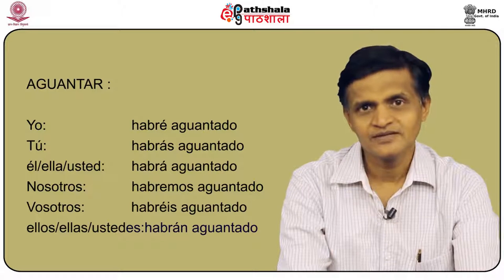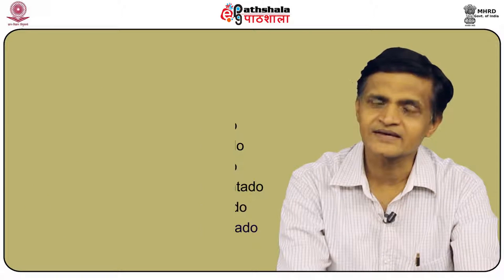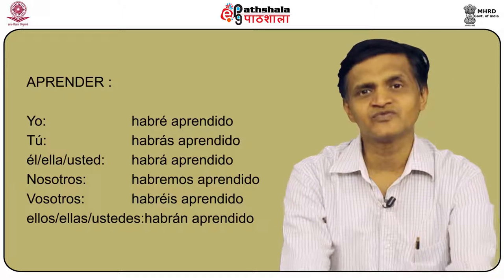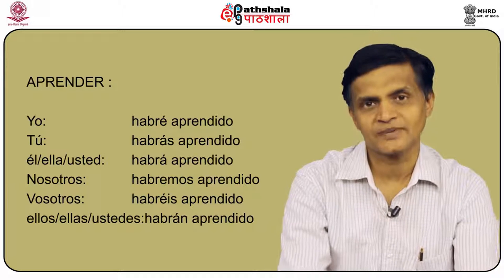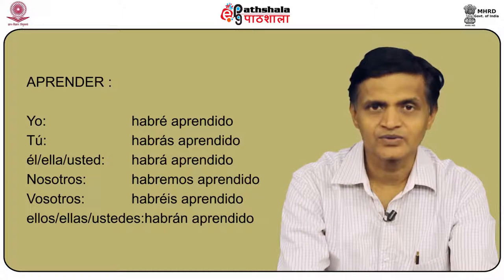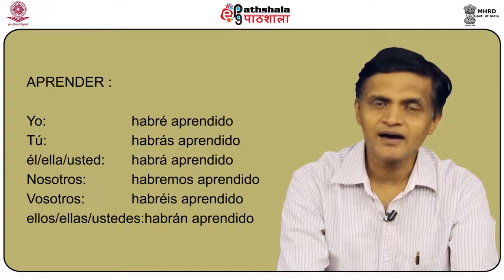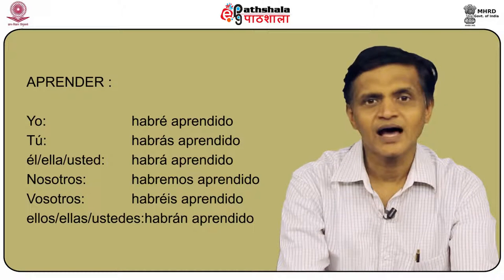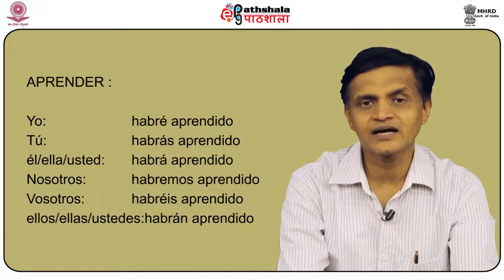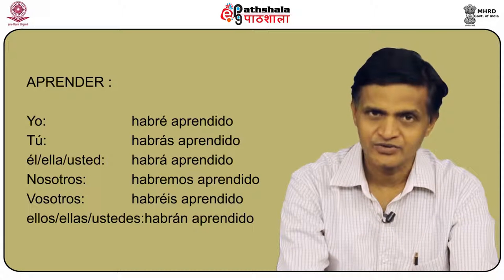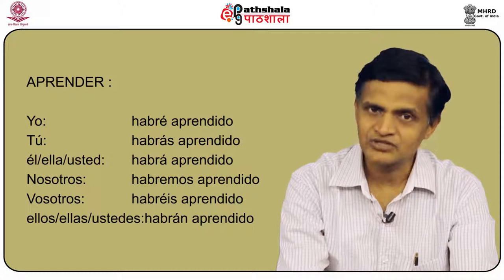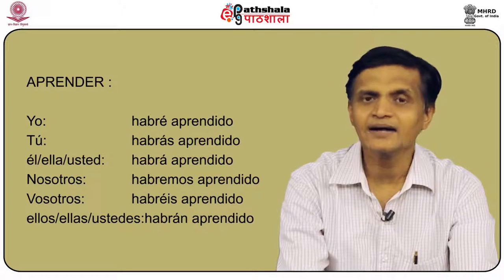Now let us learn aprender, which is an -er ending verb. With -er and -ir verbs, we remove the ending and add -ido. So aprender becomes: yo habré aprendido, tú habrás aprendido, él/ella/usted habrá aprendido, nosotros habremos aprendido, vosotros habréis aprendido, and ellos/ellas/ustedes habrán aprendido.